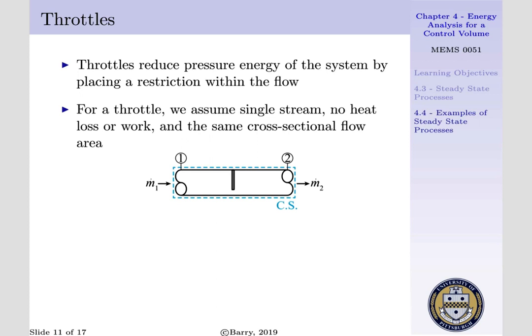For a throttle, we are going to assume a single stream, that is, our flow enters at one inlet and exits at one exit. We also assume that there is no heat transfer or work being done by our throttle, and oftentimes we assume the same cross-sectional flow area at our inlet and exit.